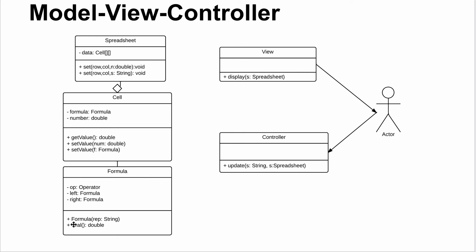We've been thinking about the spreadsheet data itself — how to store formulas and numbers — that's the Model. The View takes the model and shows it to the user: it's all the code that draws stuff on the screen. The Controller takes input from the user and changes the model — when the user clicks or types, it updates the model, which may trigger a view update. All programs should have separate classes for these; the model should always be separate.